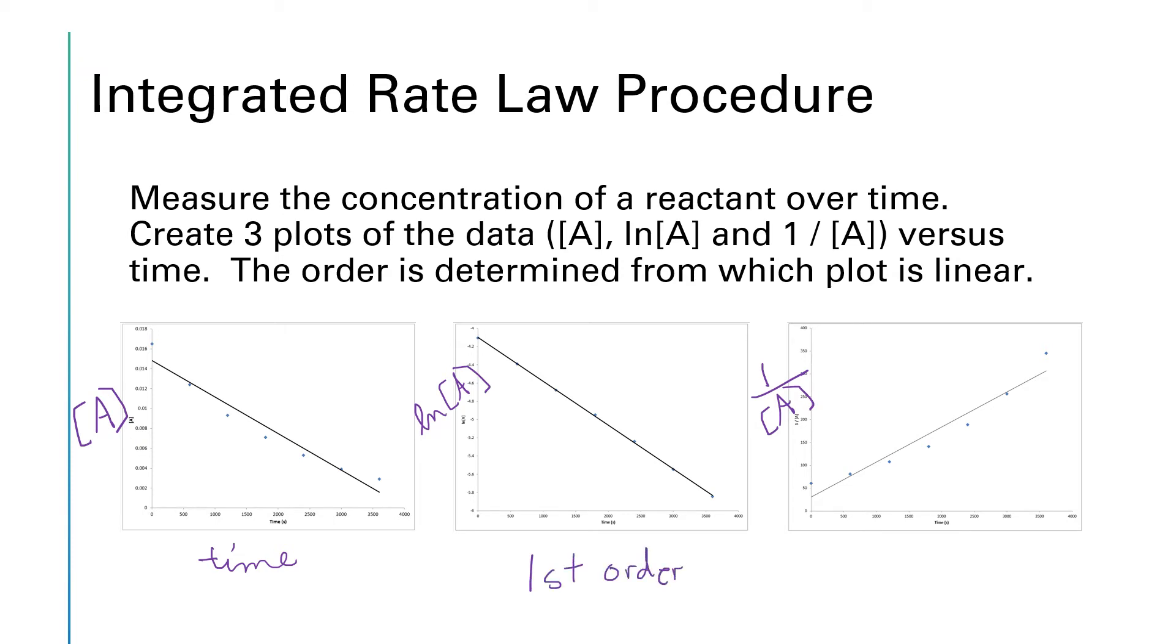Now, if instead of this log plot being the most linear, let's say the reciprocal plot was the most linear. If that one had been most linear, then instead of first order, it would be second order. And if the just plain old concentration plot, the first one on this page had been the most linear, then it would have been a zero order. This is typically what you'll see when you do a plot. Two of the plots, you can tell by eyeballing them, are curves. And one of the plots will be much more linear. That tells you what the order is.